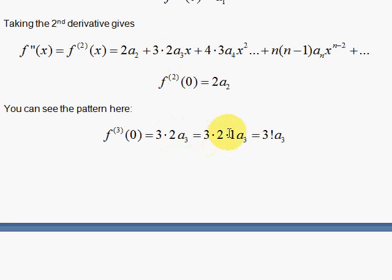I like to write this with 3 times 2 and the 1 in there, so that we can recognize that as 3 factorial a₃.